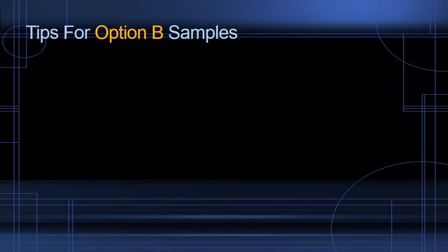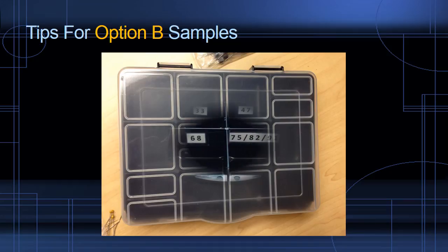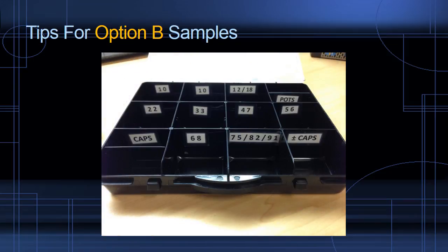Let's take a look inside one of these sample compartment boxes. So here's our box. It has 12 to 15 compartments, and inside we've labelled each bin with the different types of components that we're going to place there.